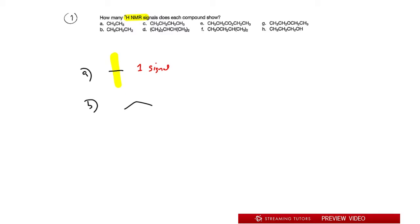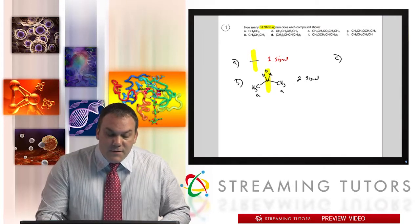For B we have propane — we already solved this in the theory video. There's a plane of symmetry right there, which means the methyls on the right and left side are exactly the same. Full rotation means we consider all H's on the same carbon to be equivalent, giving one reading for all six H's. Then there's a carbon in the middle with two H's. Whatever is on the plane of symmetry line is not the same as what's outside the line, so those are different — we call those B. So we have two signals.